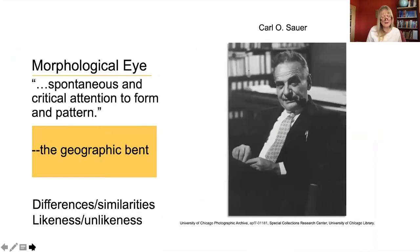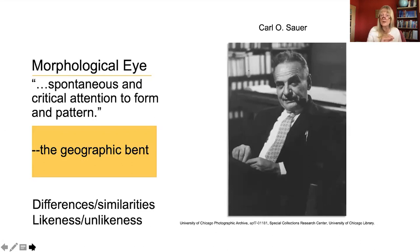So back to my original question: how do geographers think? The famous geographer Carl O. Sauer termed our way of seeing the world geographically — spatially and environmentally — the morphological eye. By morphological eye, he meant the study of morphology: the shape or form of something. Geomorphology, for example, is studying the shape and form of the Earth. Sauer said geographers have this morphological eye — a spontaneous and critical attention to form and pattern. He further characterized geographers as having a specific habit of mind, the geographic bent.